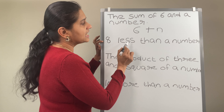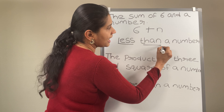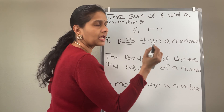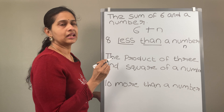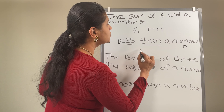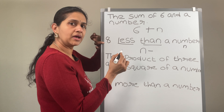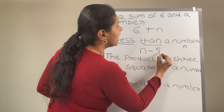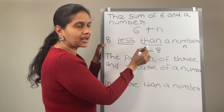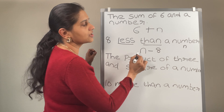Now, 8 less than a number. You have to remember: when you see 'less than,' whatever comes after this statement should come first. For example, consider the variable n. So 8 less than a number n means first you write n. Less than means minus — minus 8. So n minus 8. Don't write 8 minus n, because the number after 'less than' should come first.